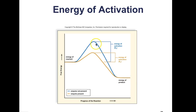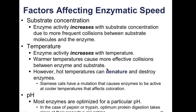A couple of factors affect enzymatic speed. Substrate concentration and enzyme concentration both affect the speed of an enzyme. As you increase the substrate concentration, enzyme activity generally increases because you have more frequent collisions between substrate molecules and the enzyme.